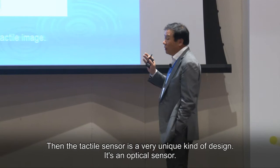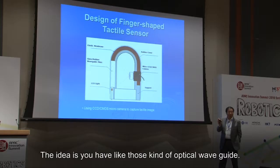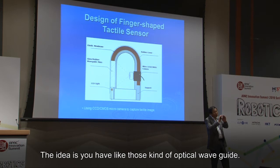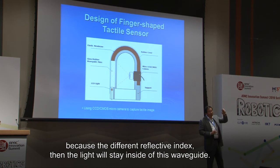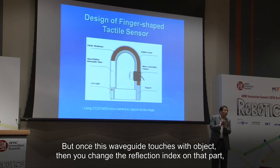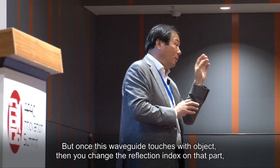The tactile sensor is a very unique kind of design. It's an optical sensor. The idea is that you have optical waveguides, and because you coat a special material on the surface, when you send light from one end, due to the different refractive index, the light stays inside the waveguide. But once the waveguide touches an object, you change the reflection index on that part, and the light gets leaked out from the back.